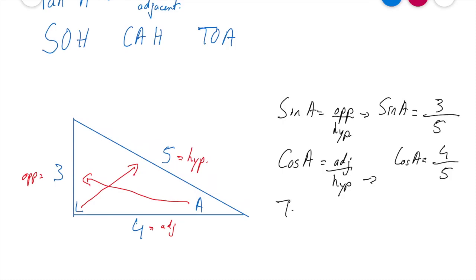And last but not least then is tan A. So tan A, our main rate for that is TOA. So tan A, so TOA, T-O-A, T for tan, O for opposite, A for adjacent.